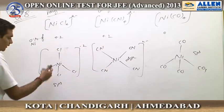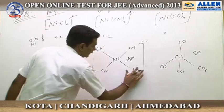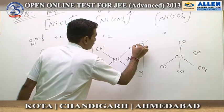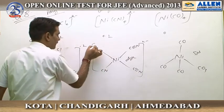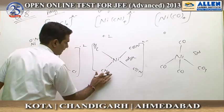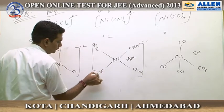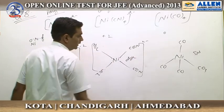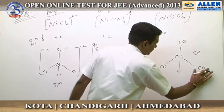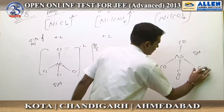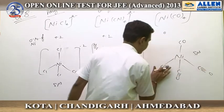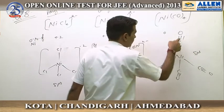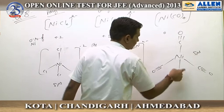Regarding number of sigma bonds: complex 1 contains 4 sigma bonds. Complex 2 contains 8 sigma bonds. Complex 3 also contains 8 sigma bonds. So the number of sigma bonds is not the same across all three complexes either.